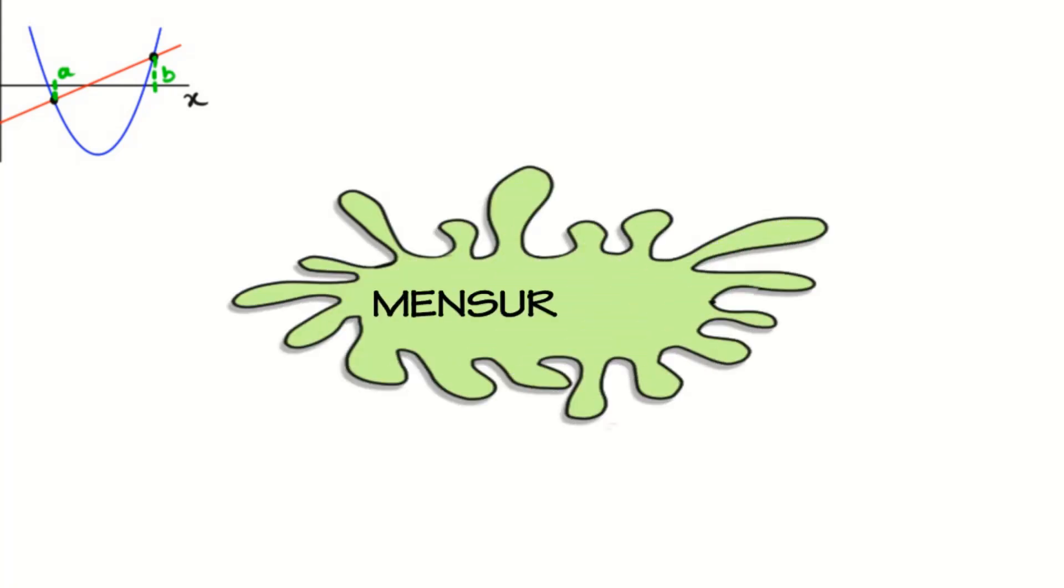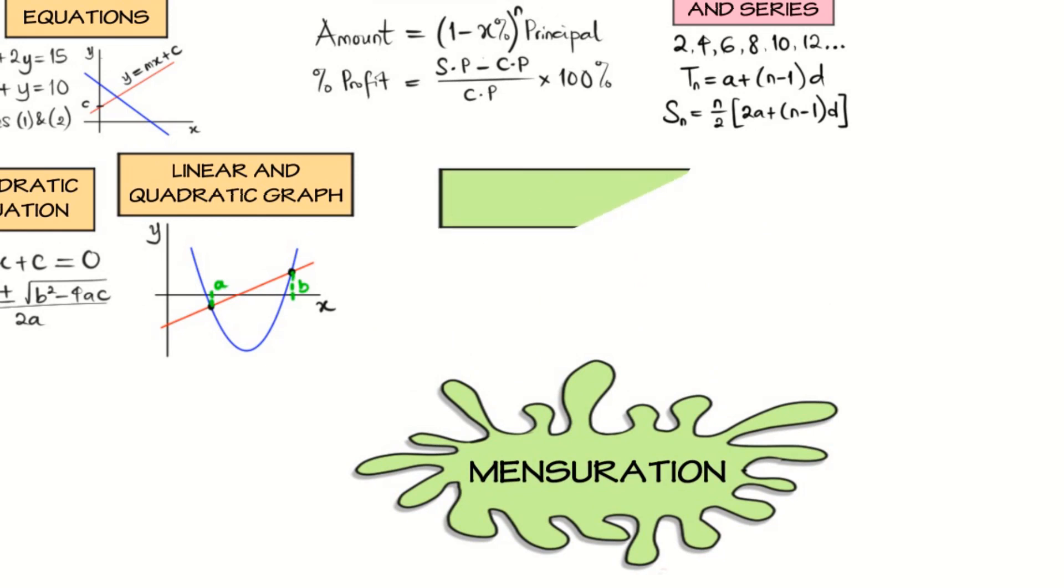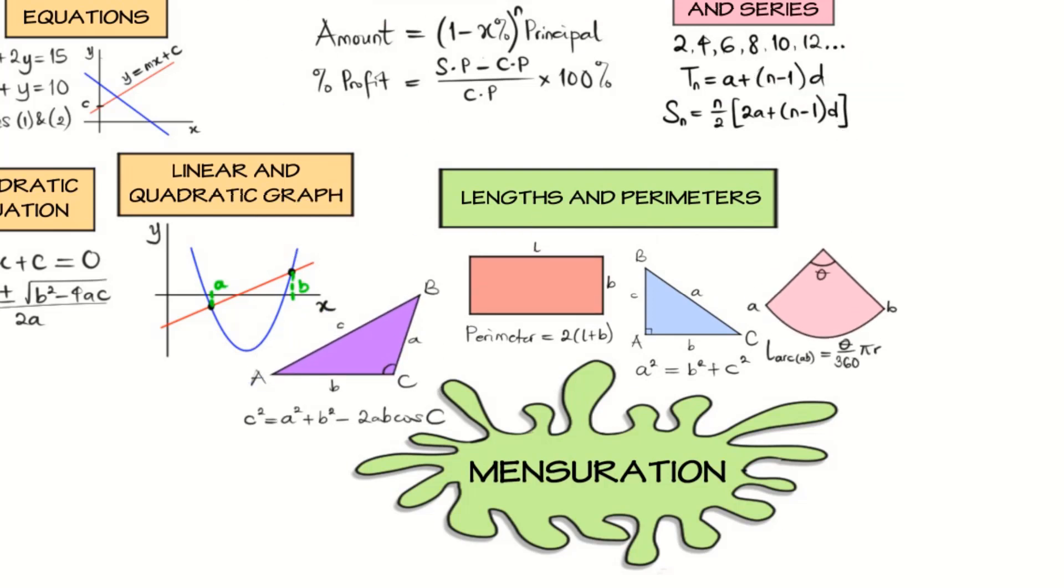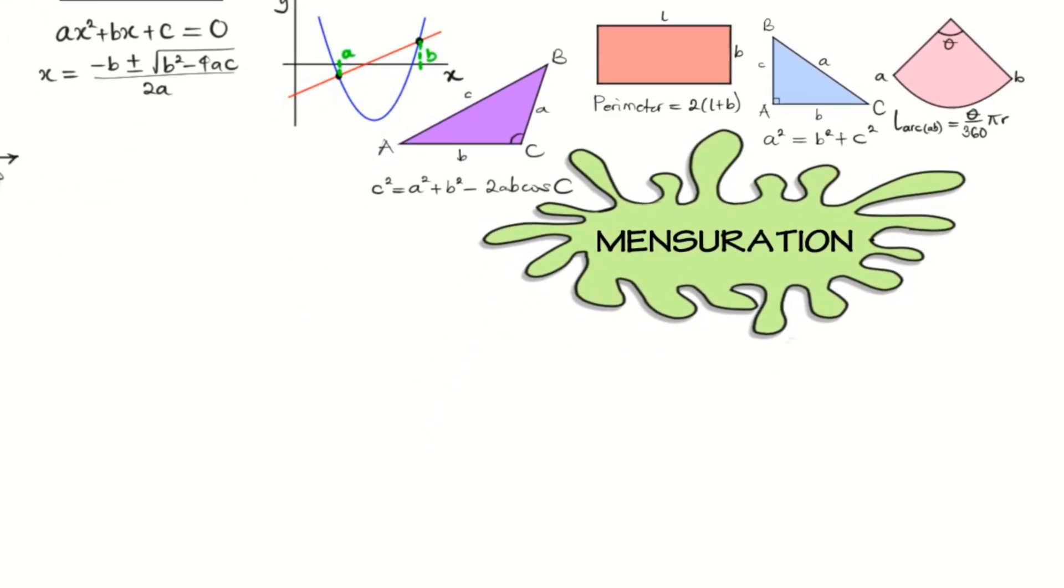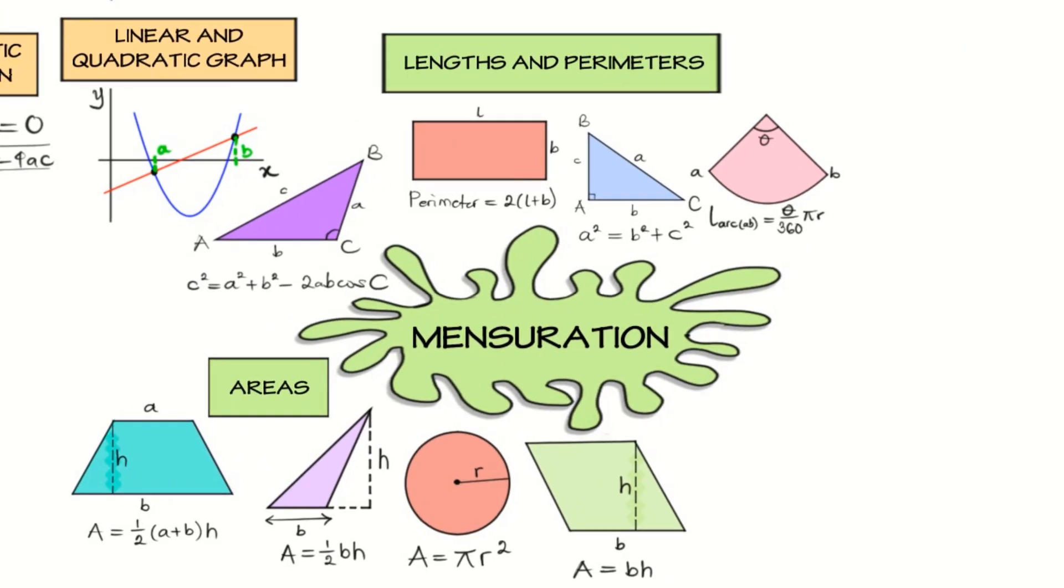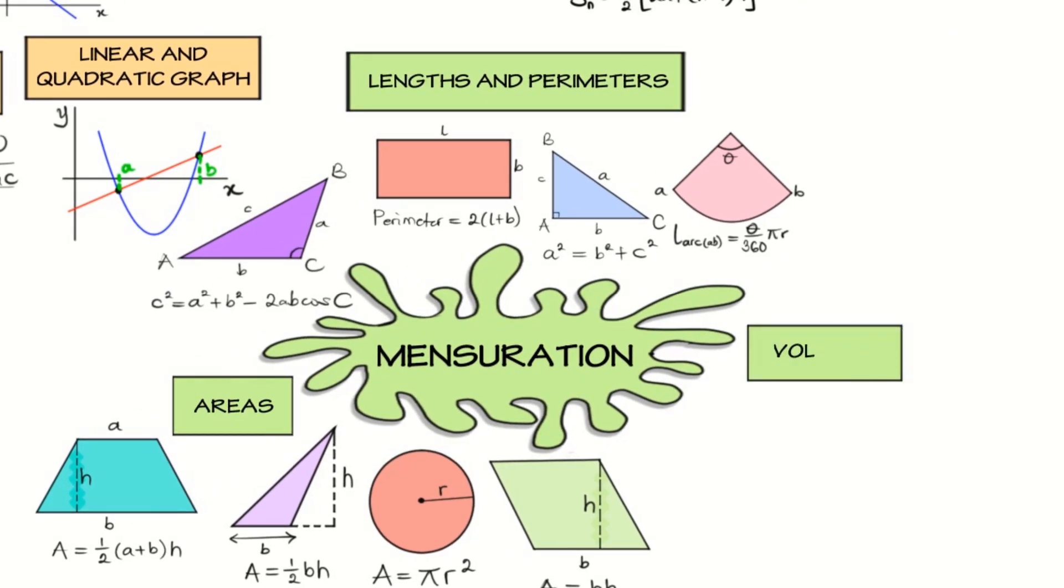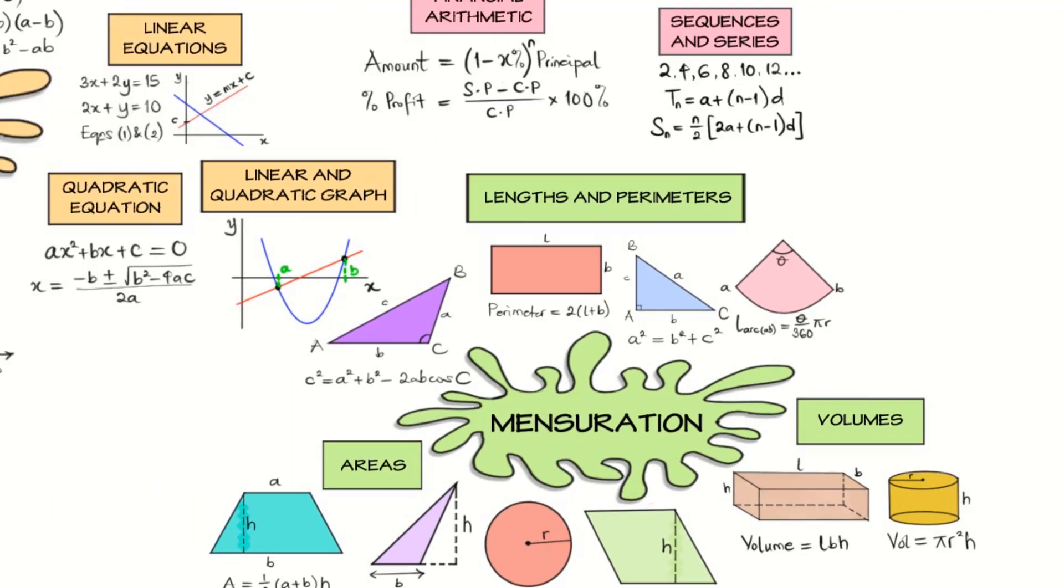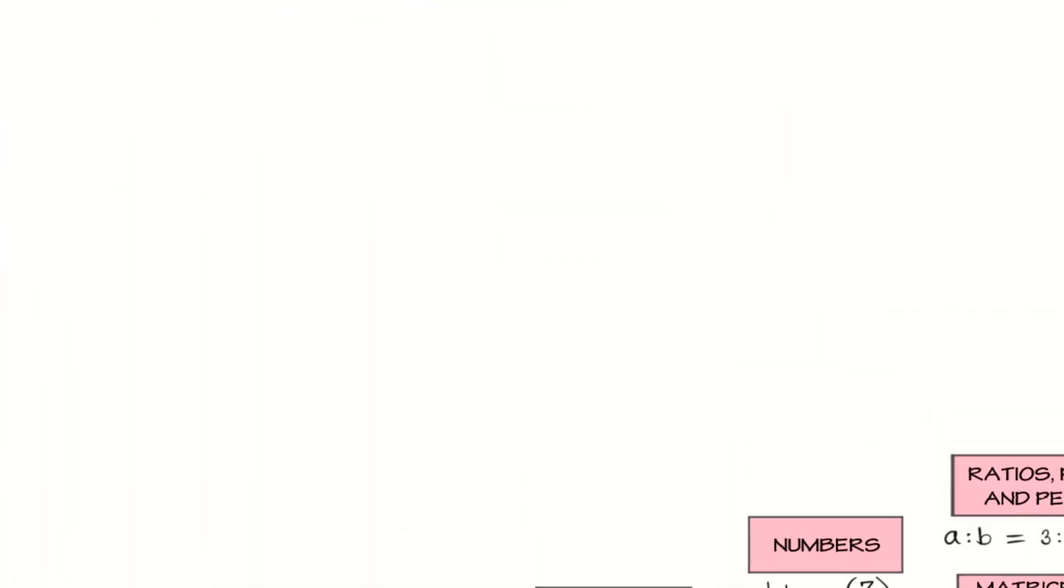Next on the line is mensuration. Mensuration is going to cover quite a whole lot of shapes. We want to talk about lengths and perimeters and the formula that we can use to solve them. We can also talk about areas. What's the area of a triangle? What's the area of a circle? The surface area of cubes, cuboids, prisms, cones, and spheres. And then we can talk about volumes of all these shapes also. We can also include volume of compound shapes. Compound shapes in which the shape is comprising two or more shapes that are fitted together to form that particular shape.